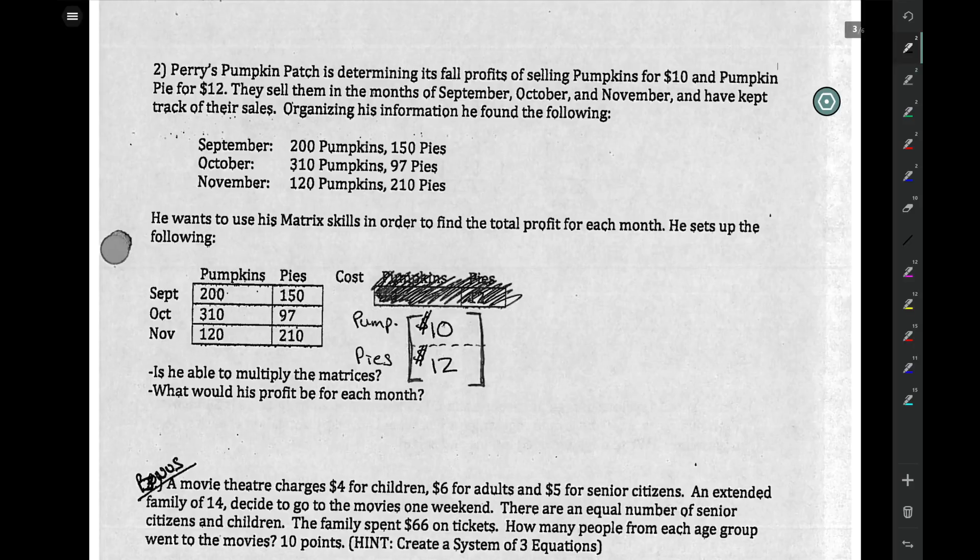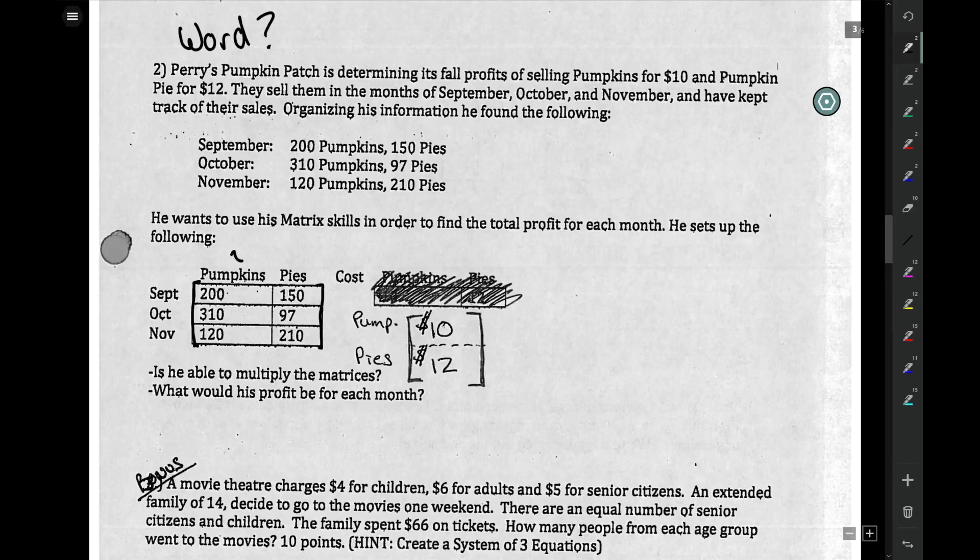Alright guys, here is the third part of our review, the dreaded word problems. They're really not as bad as what they seem. One thing I do introduce is matrices. It's just a nice way that this data is organized. Perry is organizing his sales for pumpkins and pies. These are like your x and y variables from before. Pumpkins cost $10 each, pies cost $12 each. Now the way he has it set up, he has it set up each season to season.